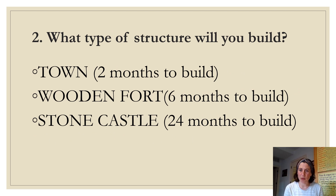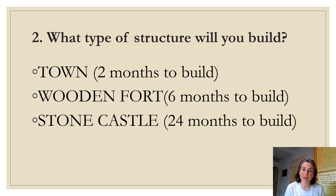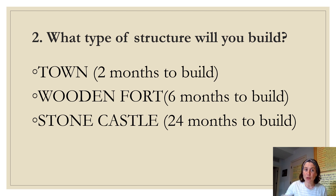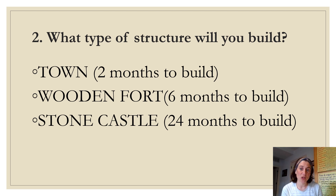Decision two: what type of structure will you build? Now that you've picked a place to live, you need to decide if you're going to build a town — that takes two months to build — or a really big wooden fort that houses a lot of people, which takes about six months, or a stone castle, which takes two years. Each has different advantages. Pause the video and think about it. Next to number two you're either going to write 'town,' 'fort,' or 'castle.'